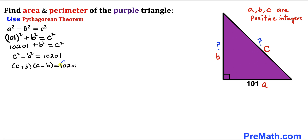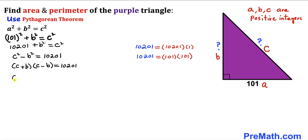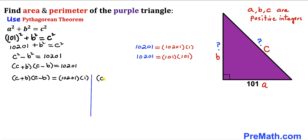Now let's focus on this right-hand side constant. The only possible factor pairs of 10,201 are either 10,201 × 1, or 101 × 101. So we can write (c + b)(c − b) as either 10,201 × 1, or 101 × 101.